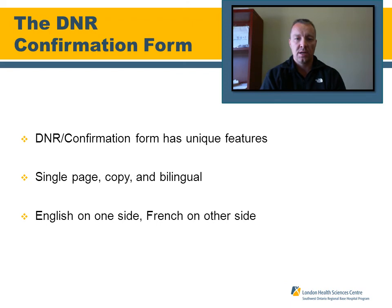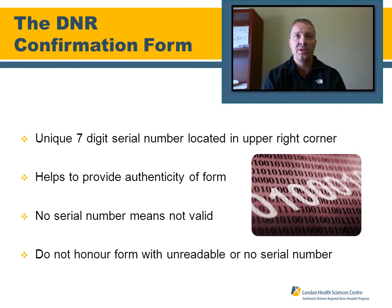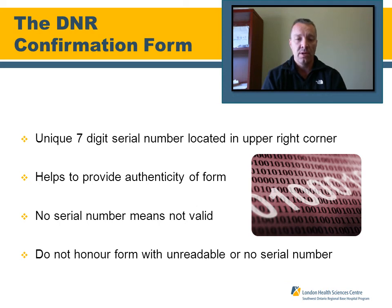The DNR confirmation form has a few interesting features that make it simpler for the families, the physicians, the nurses involved, the paramedics, and the patient themselves. First, it's a single page and it is bilingual — English is on one side of the form and French is on the other side. In addition, it has a unique seven-digit serial number individualized for that particular patient. No two patients have the same number. This number helps validate the authenticity of the form. If there is no serial number, or you cannot read it because it's faded, ripped, or torn, it's not valid and we are not to honor that DNR confirmation form.